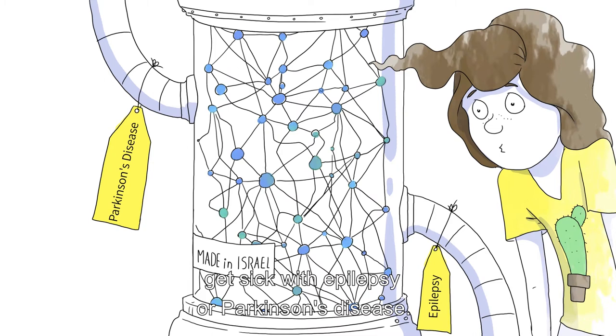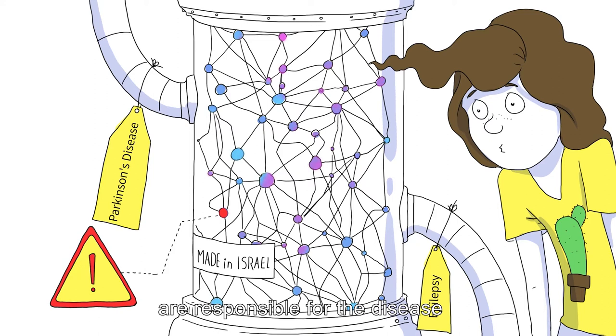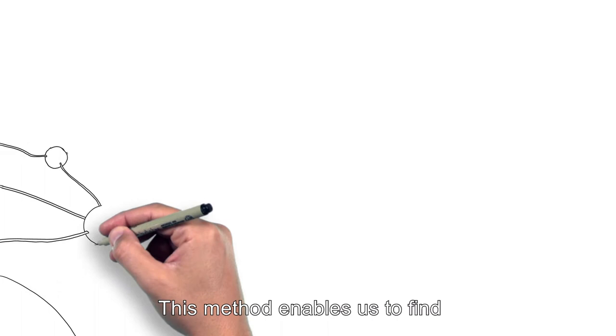Then, we try to make the model we built get sick with epilepsy or Parkinson's disease. Once we succeed, we'll understand which components are responsible for the disease, and hopefully, we will know how to cure it. This method enables us to find where the neural mechanisms of other diseases hide as well.